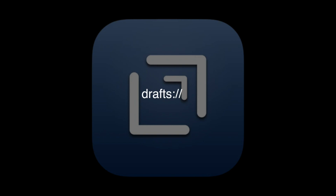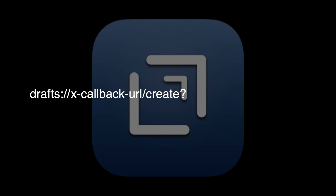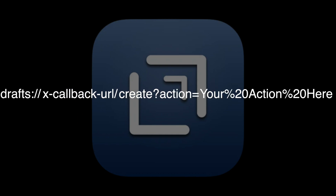We can do that by knowing the callbackURL for that Draft. It would be: Drafts xCallbackURL, open the ID for the document — or if we're wanting to create a new document, we would just use 'create' — and then 'action' and whatever the name of the action we want to run. It's that simple.